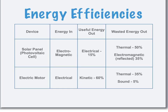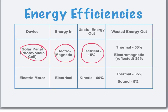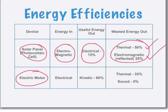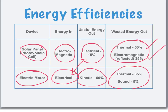These are the two steps of our system. For the solar cell, the input energy is light — electromagnetic energy. Research shows the solar panel can convert about 15% of that into electricity, and the remaining 85% is wasted energy — some thermal, some electromagnetic energy reflected off the panel. For the electric motor, the input is electricity from the solar panel, and it converts 60% of that into motion. The remaining 40% is wasted — mostly thermal energy and a small percentage sound.